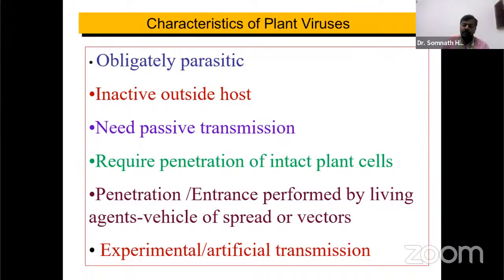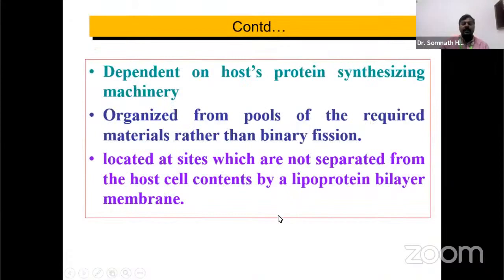Experimental or artificial transmission is also required for plant viruses — to study whether they are transmitted by sap or by insects, we need to carry out transmission studies under greenhouse or artificial conditions. These viruses are dependent on the host's protein synthesizing machinery, organized from pools of required material rather than binary fission, which is the mechanism in bacteria. They are located at sites not separated from host cell contents by a lipoprotein bilayer membrane.